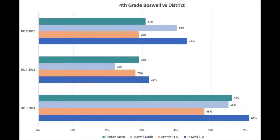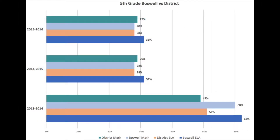Slide 7 shows 4th grade performance at the school and district level. Boswell's ELA performance showed growth from the 2014-15 to 2015-16 school year, bringing scores more in alignment with district performance. The 5th grade graph shows that Boswell's performance is commensurate with the district in both reading and math for the 2014-15 and 2015-16 school years.